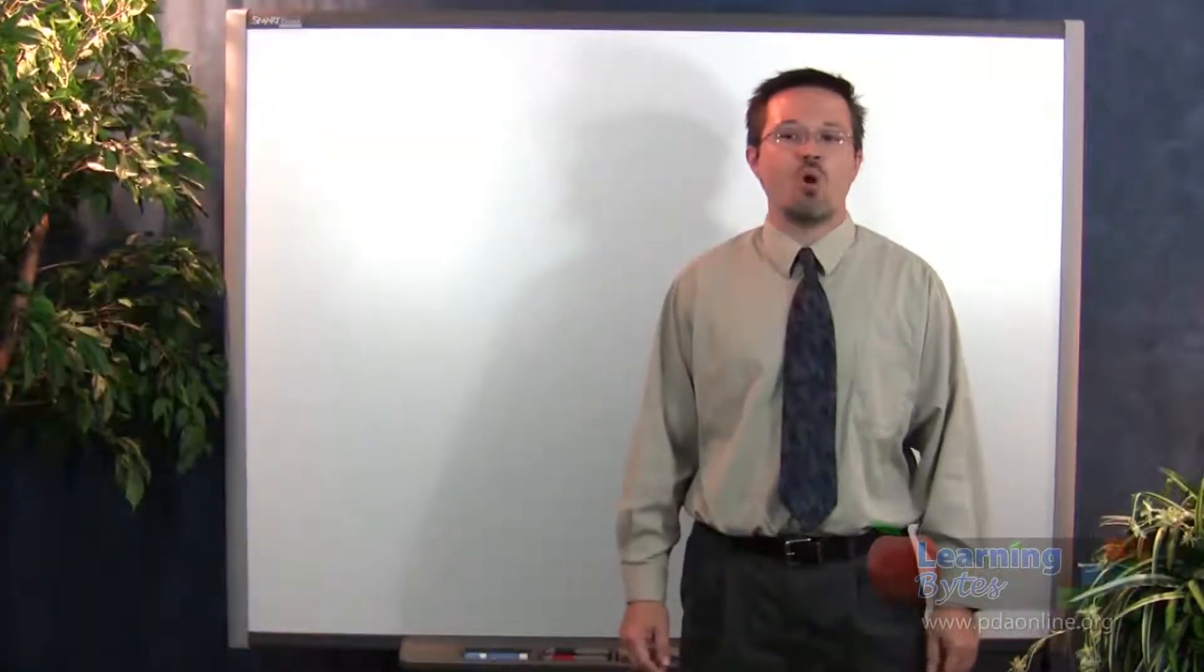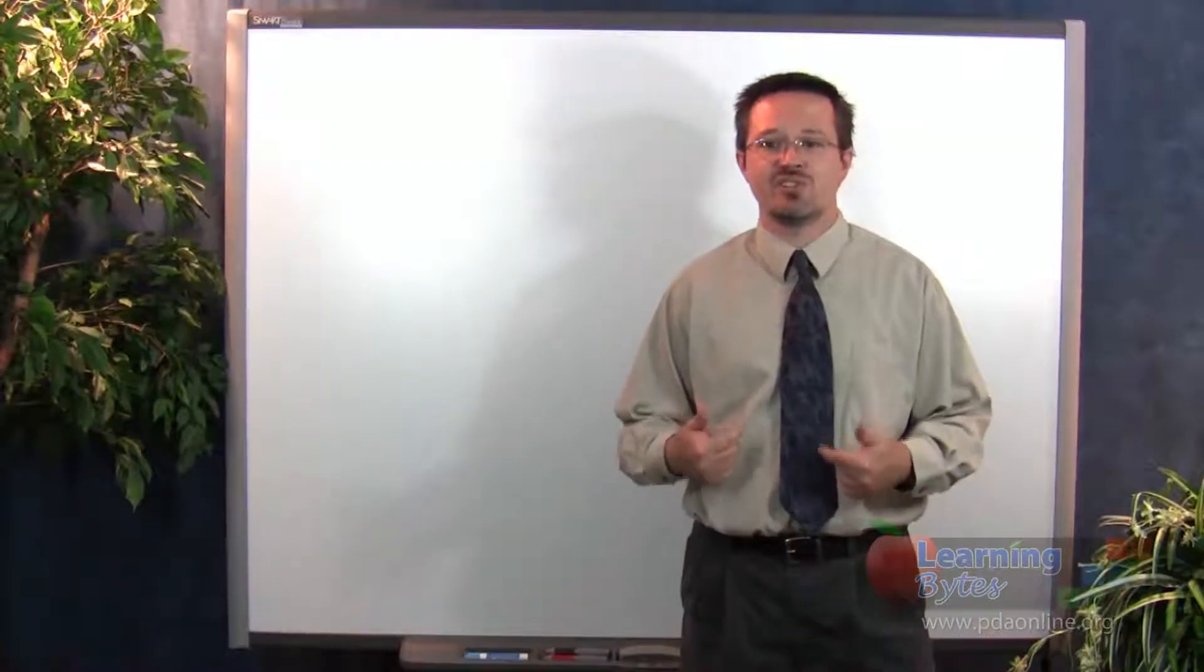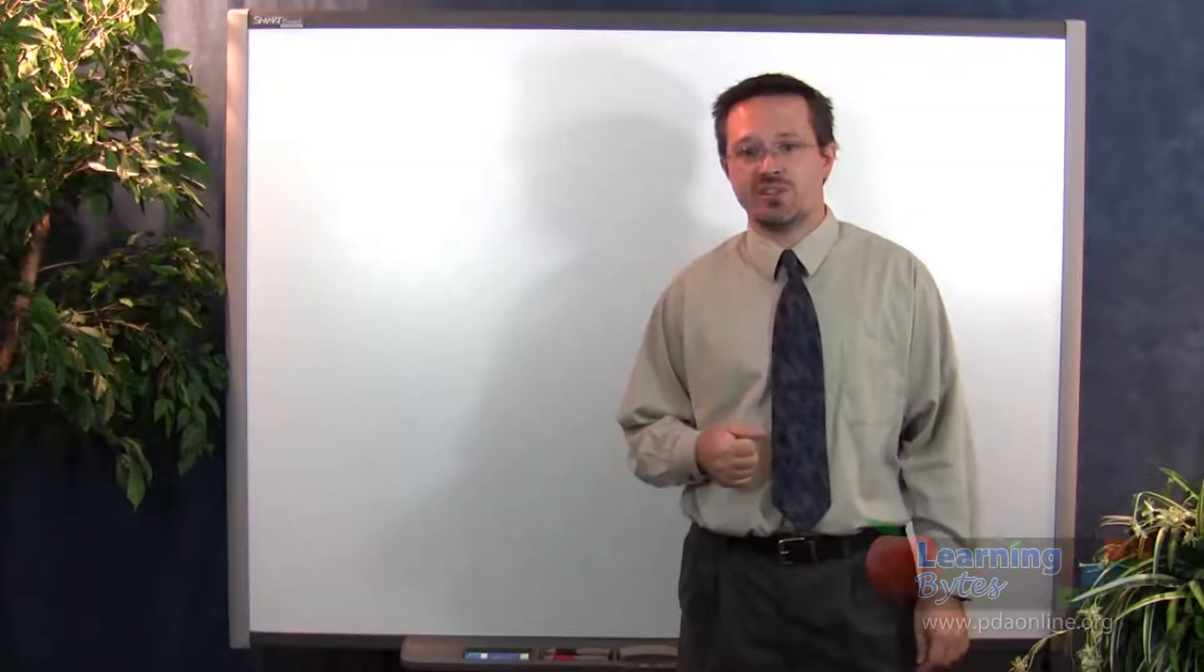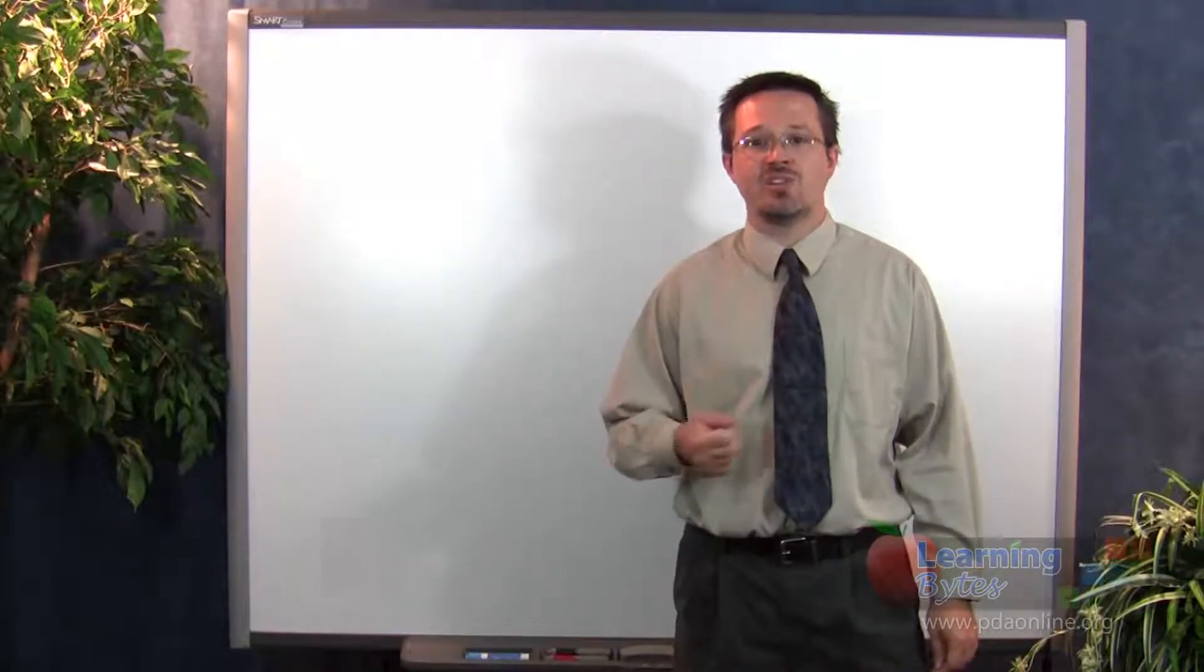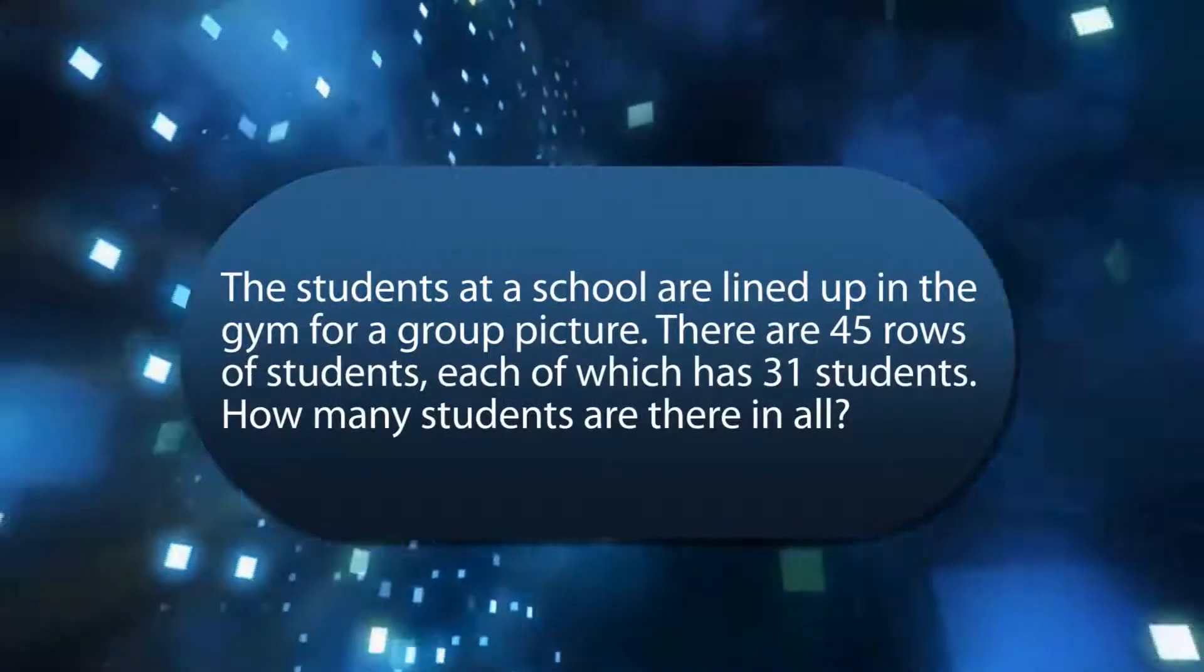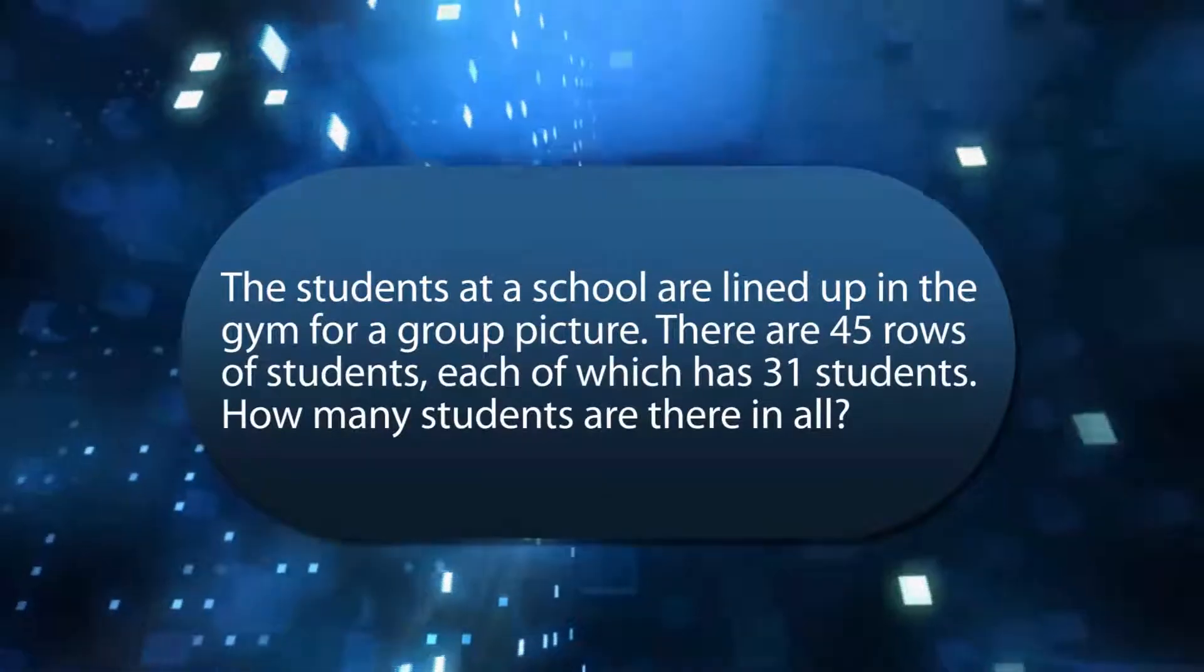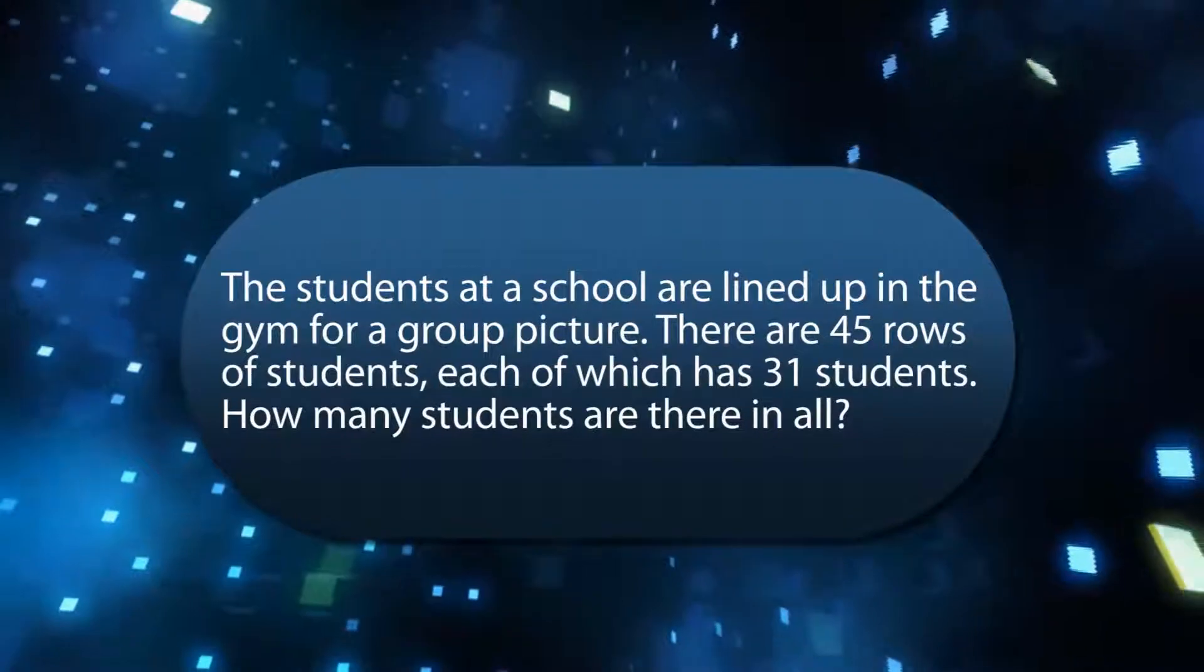For duplation to have the most impact, you want to guide students in developing the strategy themselves rather than going straight into the formal process. Let's look at a word problem that you might use to get the process started. The students at a school are lined up in the gym for a group picture. There are 45 rows of students, each of which has 31 students. How many students are there in all?